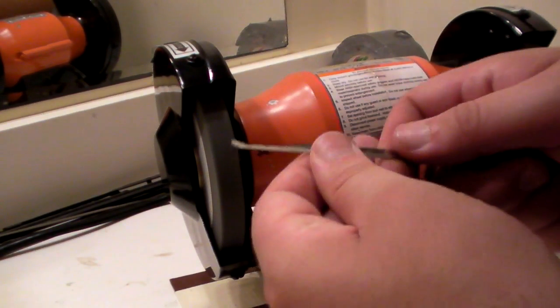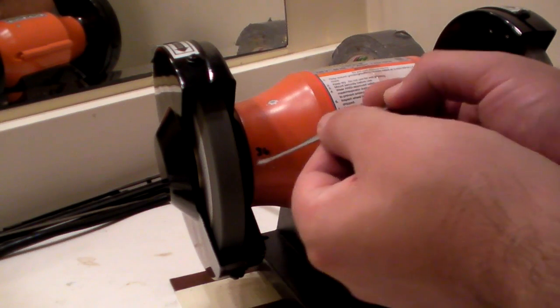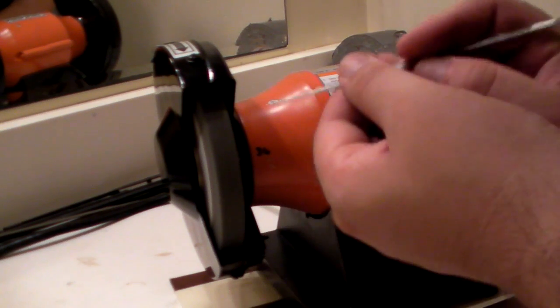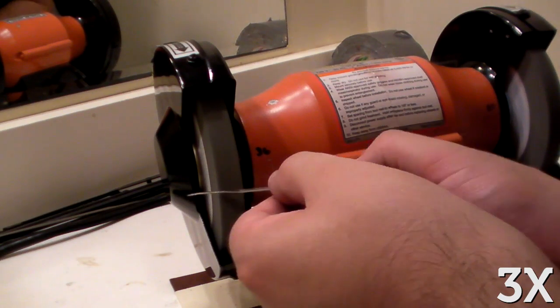And now just smoothing out those edges, trying to break those edges wherever possible. Smoothing out the sides and thinning out the pick a little bit as well. There's a lot of pitting along the pick and I just want to get everything as smooth and even as possible.